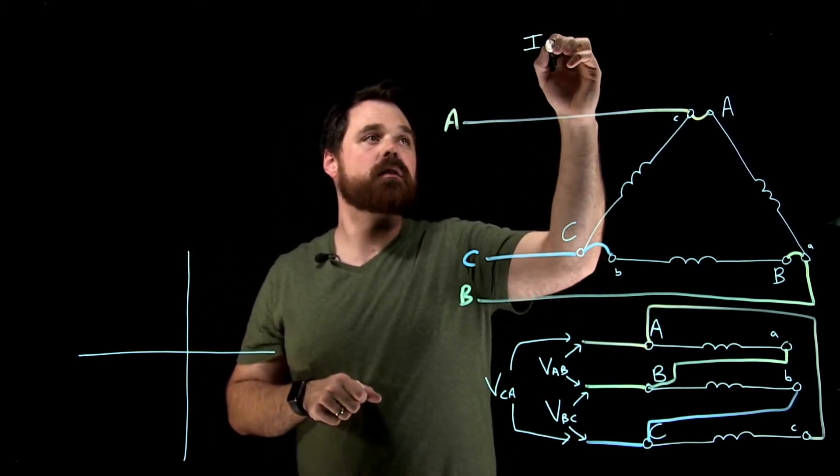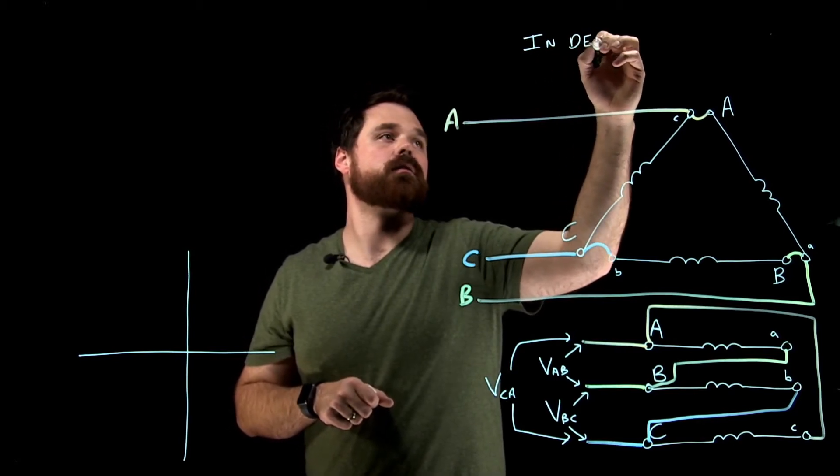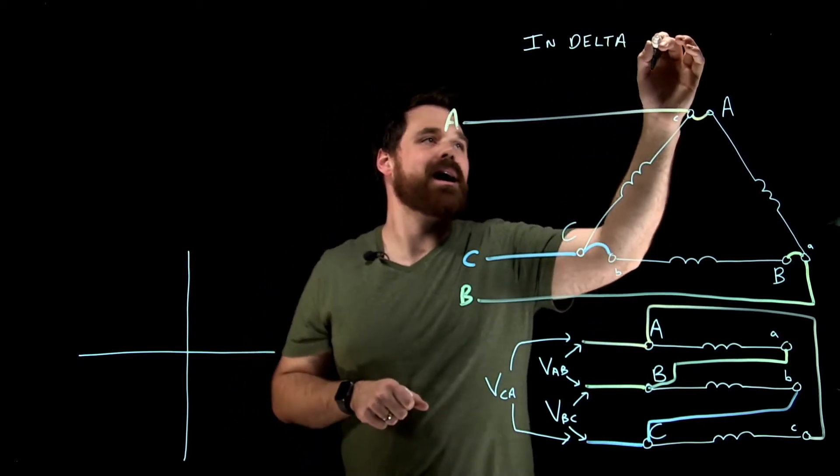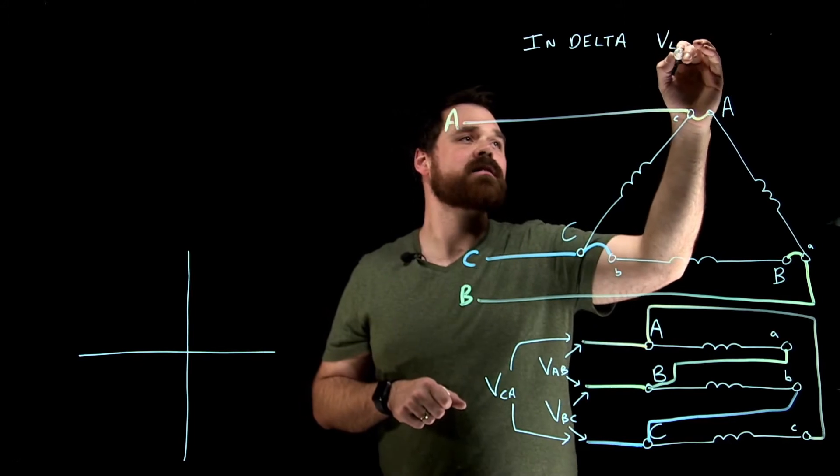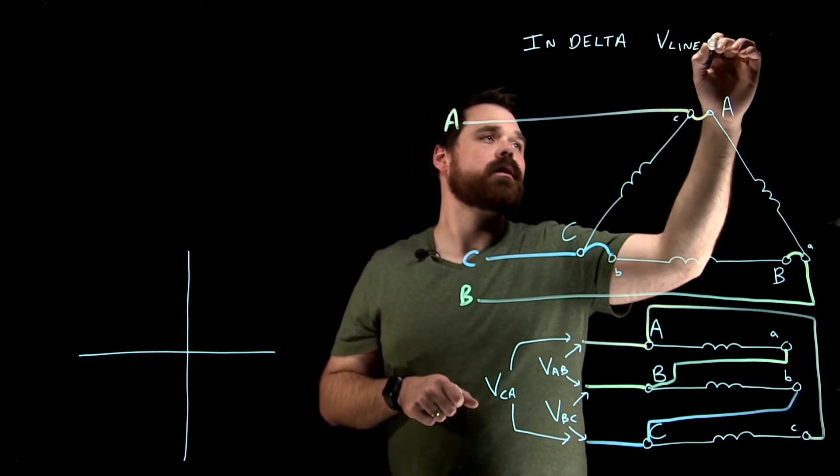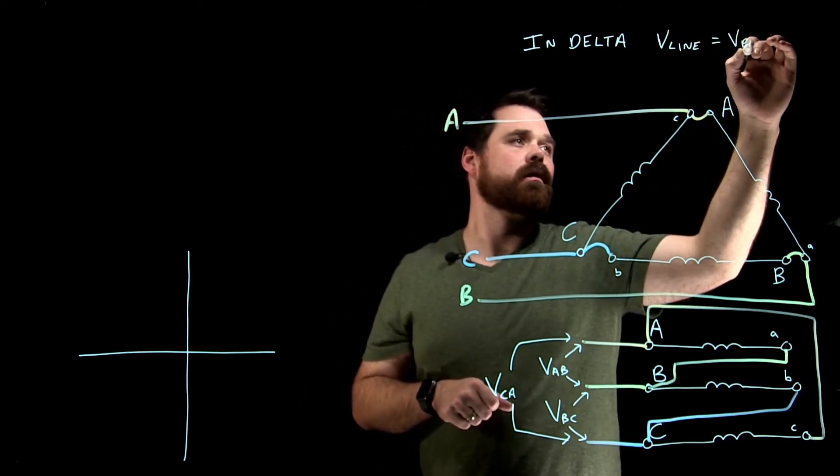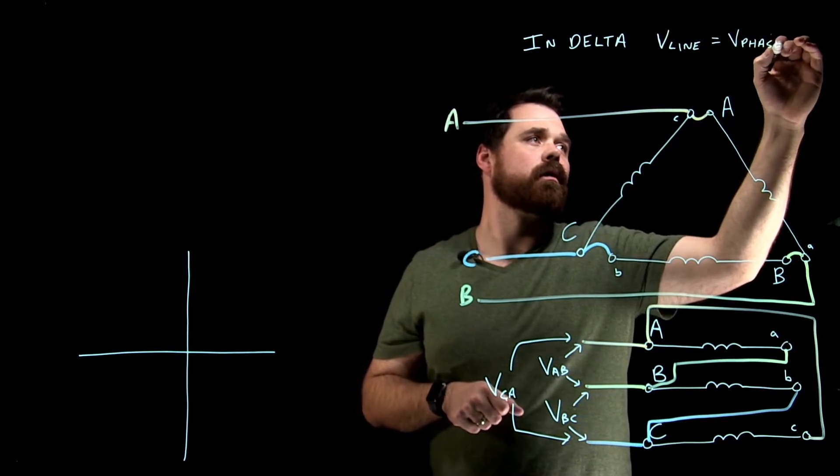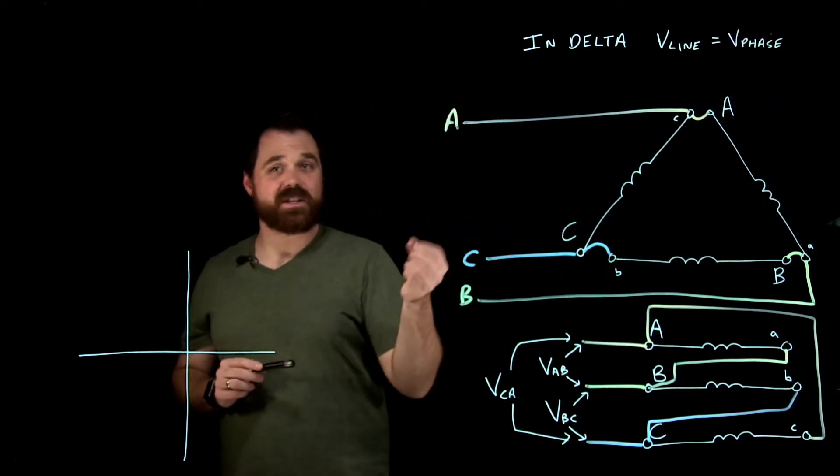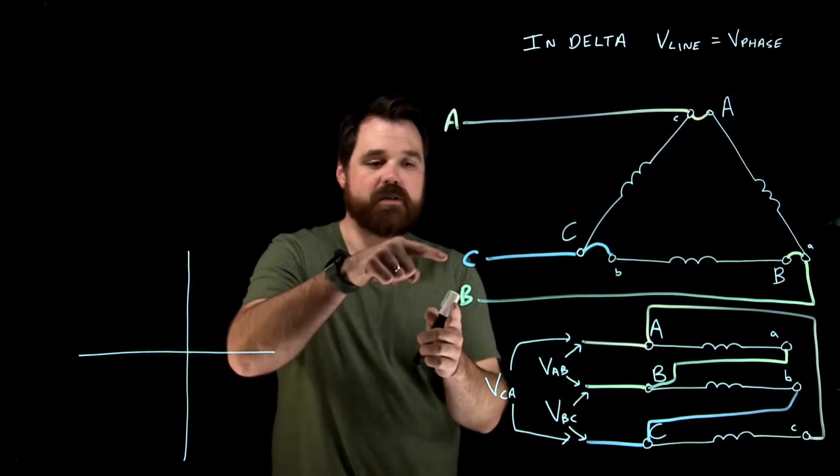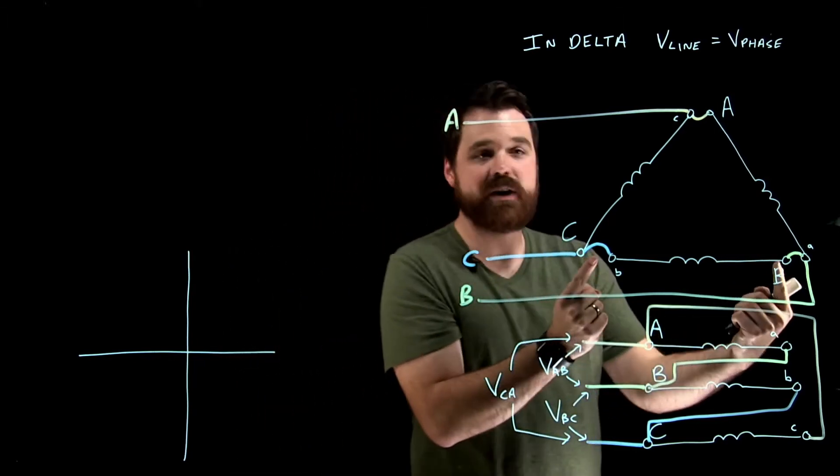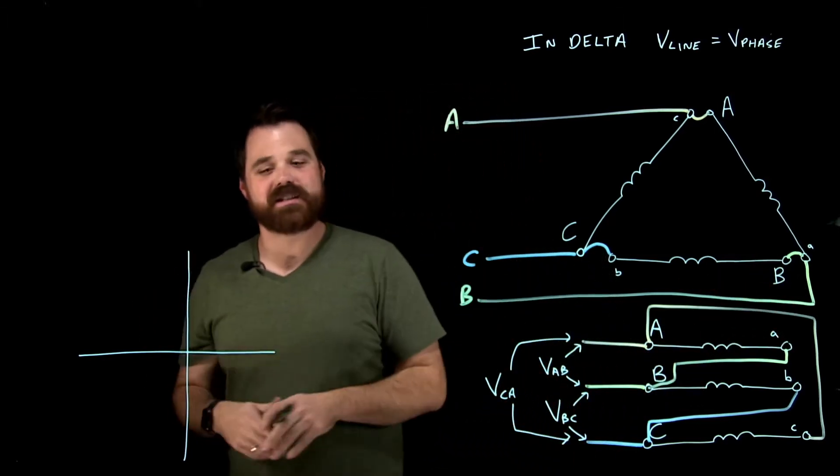In delta, V line equals V phase. Because they are the same point electrically, whether I'm measuring out here on the line or in here at the phase, they're the exact same.